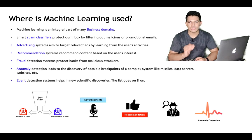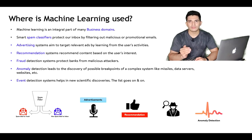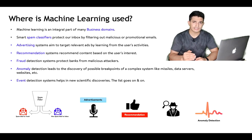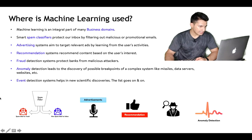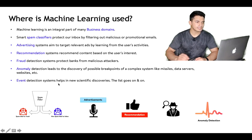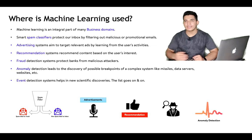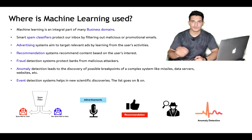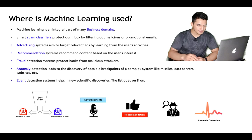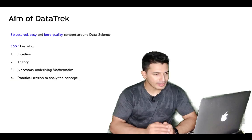Machine learning is also used in anomaly detection, which leads to the discovery of possible breakpoints in complex systems like missiles, data servers, and websites. For example, if a website is used to seeing a specific type of traffic but suddenly the traffic has enormously increased, that could be an anomaly possibly due to an attack. Anomaly detection systems try to detect that. It's also used in event detection systems, which help in new scientific discoveries — and the list goes on, which we will cover in upcoming videos.